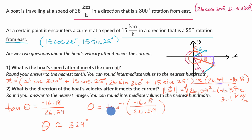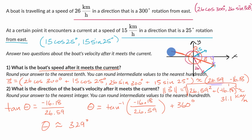So theta is approximately 329 degrees — that's theta equals negative 31 degrees plus 360 degrees. Note: if we had a situation where the angle was in the second quadrant, we would have gotten the inverse tangent result and realized we needed to add 180 degrees instead of 360 degrees to get the correct quadrant. We've covered that in other videos as well.